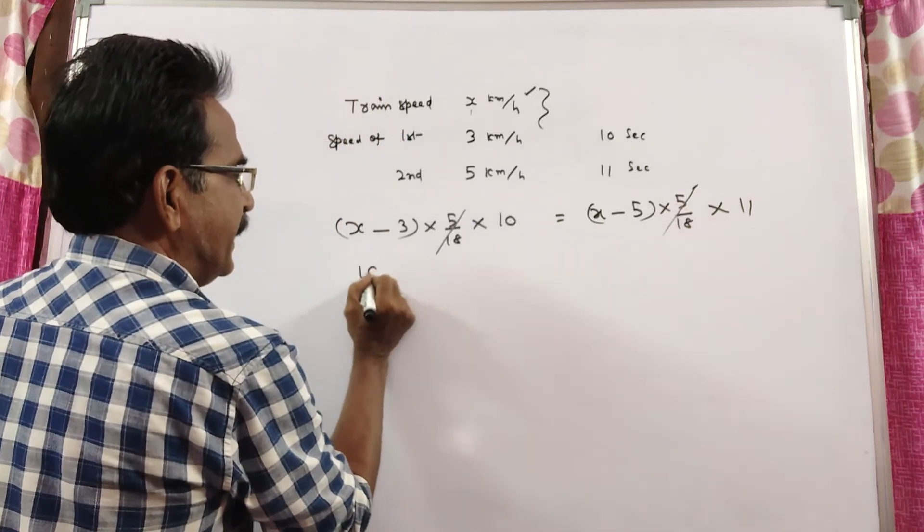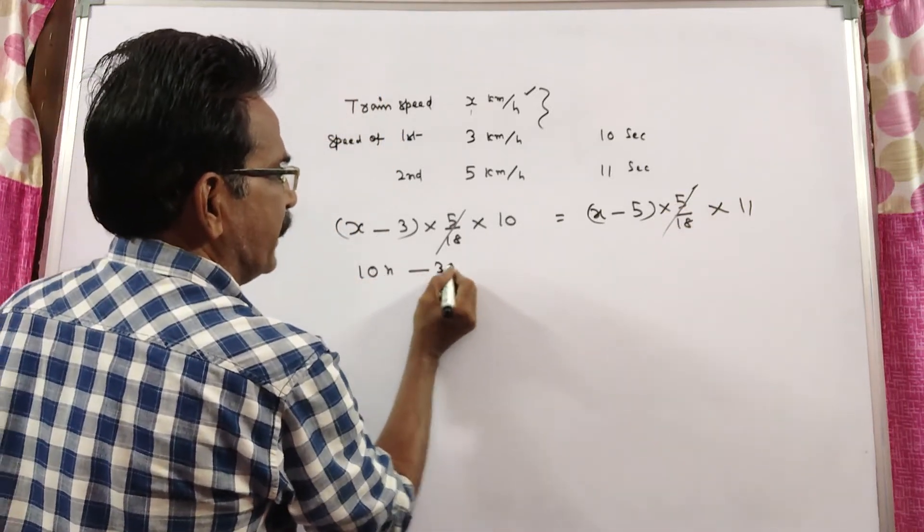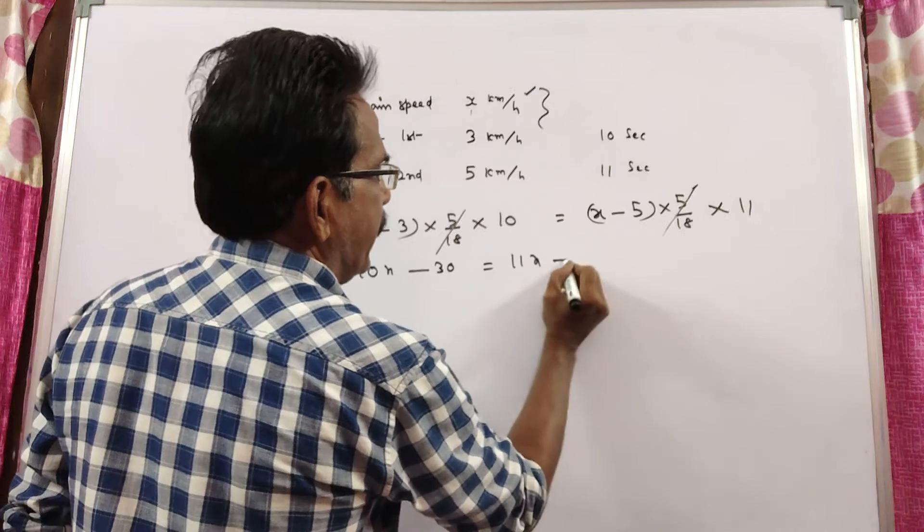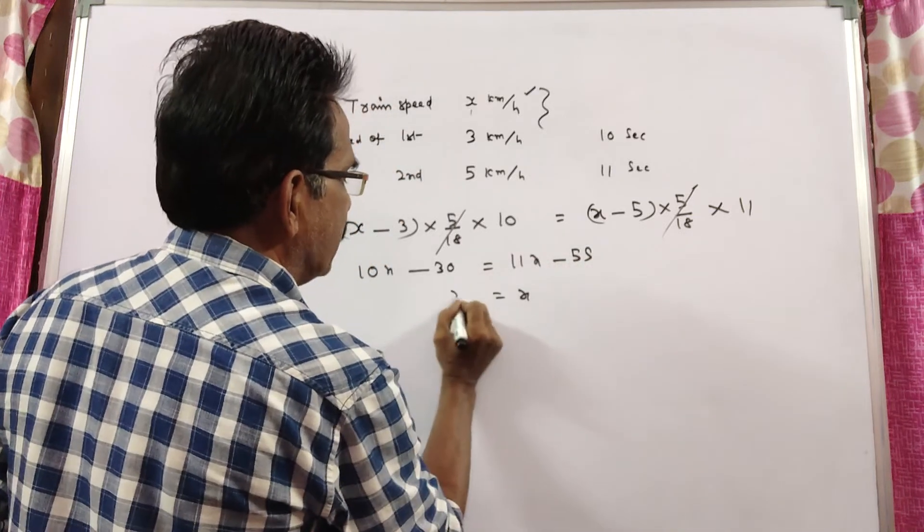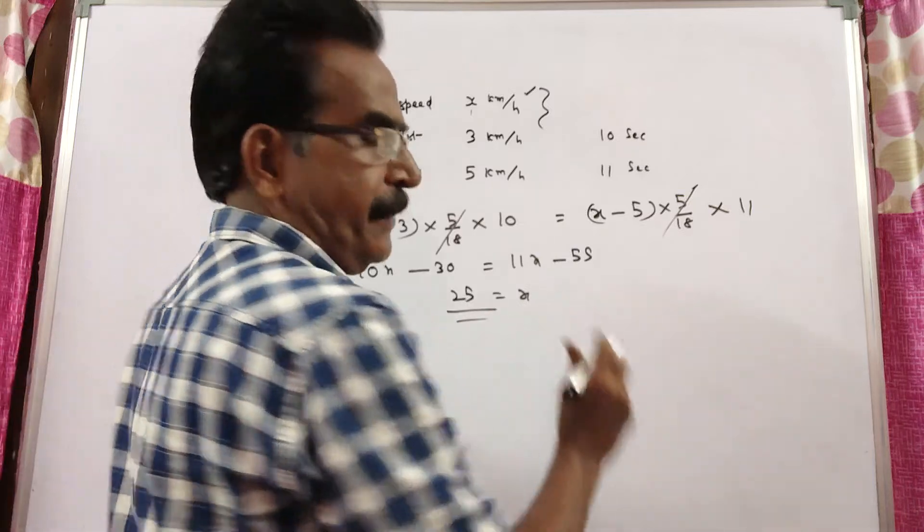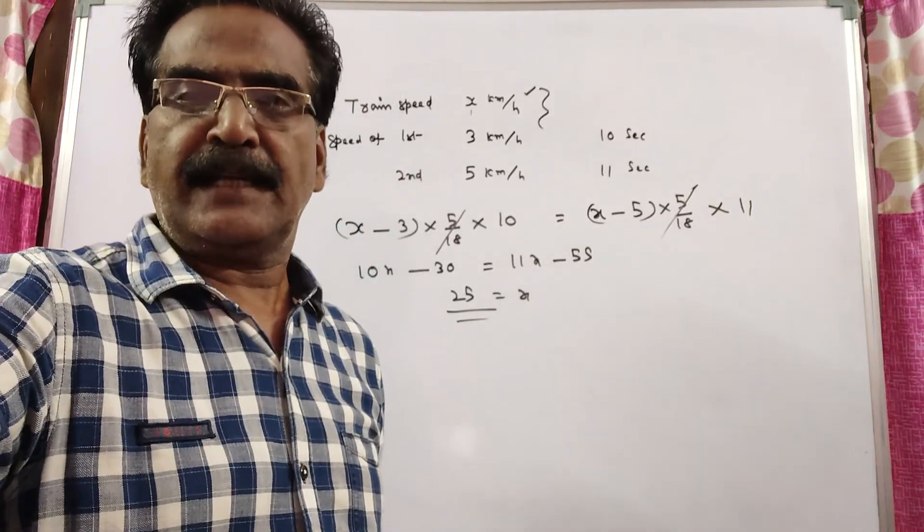Now 10x minus 30 is equal to 11x minus 55. So x is equal to 55 minus 30, 25 kmph. Thank you.